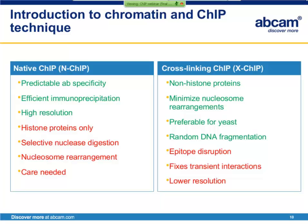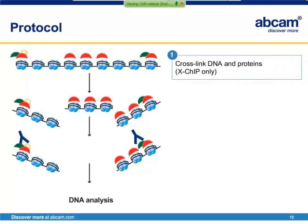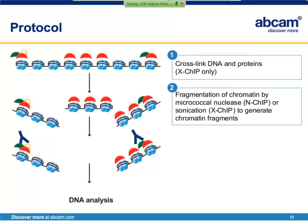X-ChIP is preferable for yeast and other organisms where native chromatin is difficult to prepare. DNA is fragmented randomly by sonication. However, you may observe inefficient antibody binding due to epitope disruption and it may be necessary to test a variety of different antibodies to find the best one. Transient interactions may be fixed leading to artifactual results. X-ChIP produces lower resolution maps as chromatin is prepared to larger fragment sizes and the target is localized to a larger region. Next, I will run through the protocol and detail what controls to include. The ChIP protocol is relatively straightforward.